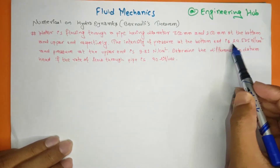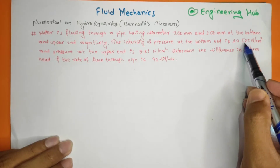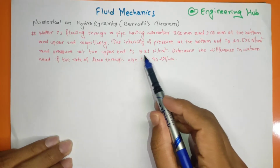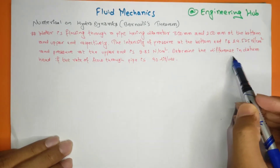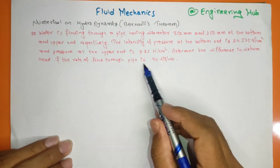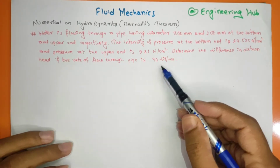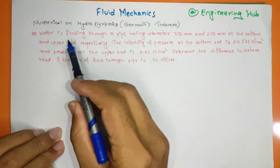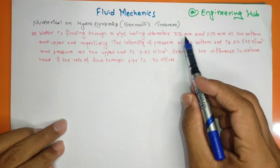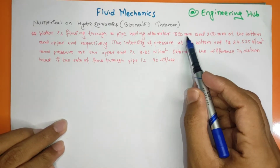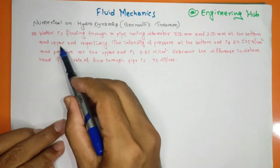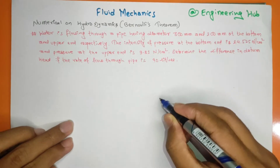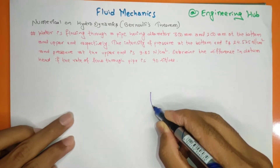The intensity of pressure at the bottom end is 24.5 N per cm² and pressure at the upper end is 9.81 N per cm². Determine the difference in datum head if the rate of flow through the pipe is 40 L per second.